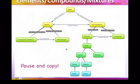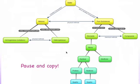I would pause right here and copy this down. This flowchart explains that matter, if it has a variable composition, is a mixture. Not variable is a pure substance. And it breaks it down for you. We're going to look at each of these parts of the flowchart individually. We'll do examples of each.